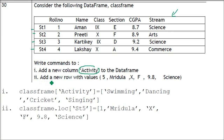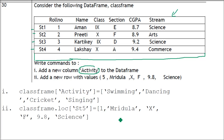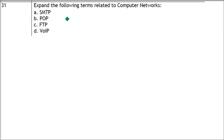Next, we need to add a new row with values: 5, Mridula, X, F, 9.8, Science. The index label is 'st5' since the existing rows go from st1 onward. We write: class_frame.loc['st5'] = [5, 'Mridula', 'Tenth', 'F', 9.8, 'Science'], where numbers are unquoted and strings are in single quotes.